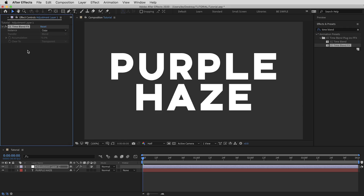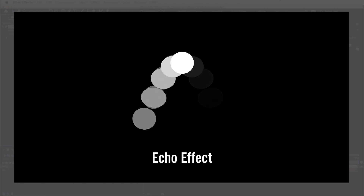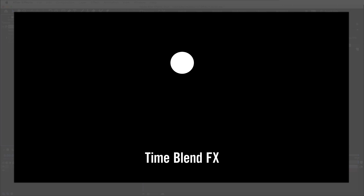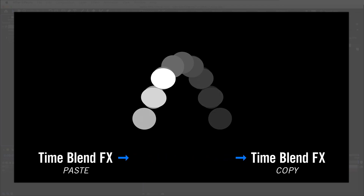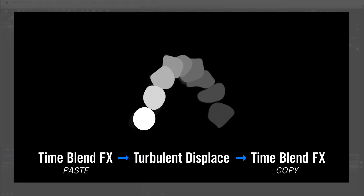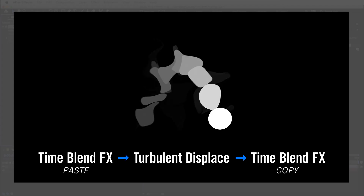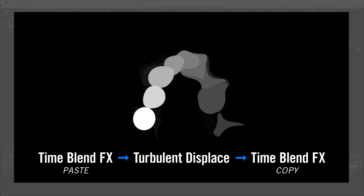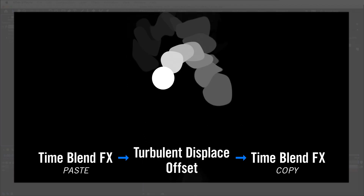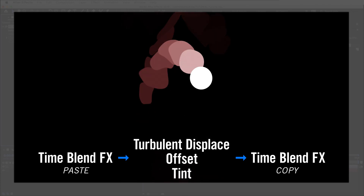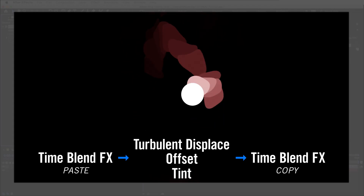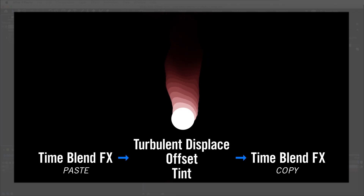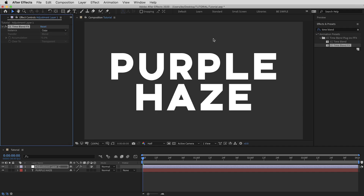CC Time Blend is more or less the same as the Echo effect. We're going to focus on CC Time Blend Effects. The logic is clearer using adjustment layers. It's basically an echo effect — you always use two copies: the one applied first is set to Paste, and the one applied last is set to Copy. In between those Time Blend Effects you can put any other effects, like Turbulent Displace, and each echo gets more and more displacement applied.